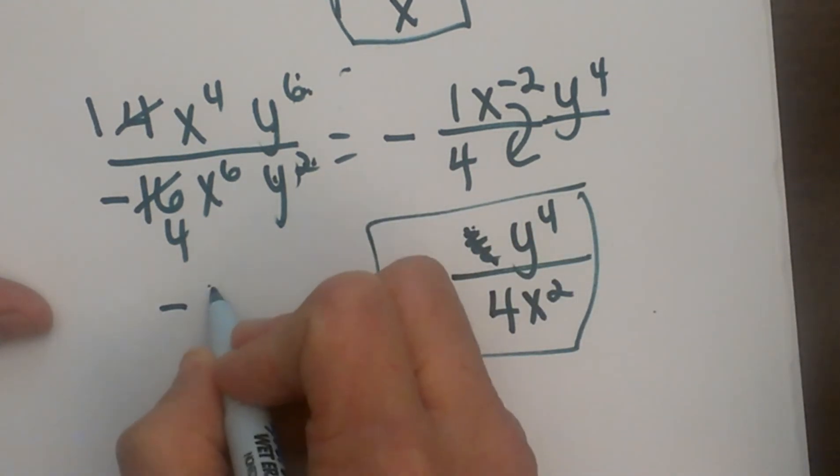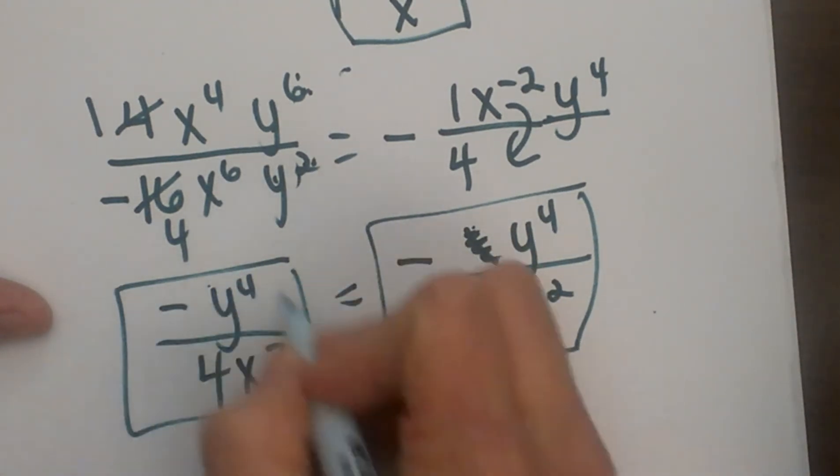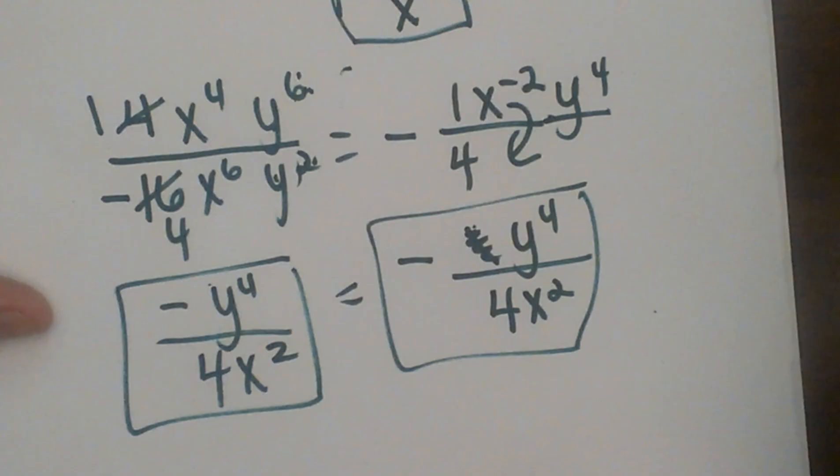Let me make that look a little neater. I have negative y to the fourth over 4x squared. And that negative you can put it in the front, you can put it in the top, but the term itself is negative. And that is how you work that one. I hope this video was helpful.